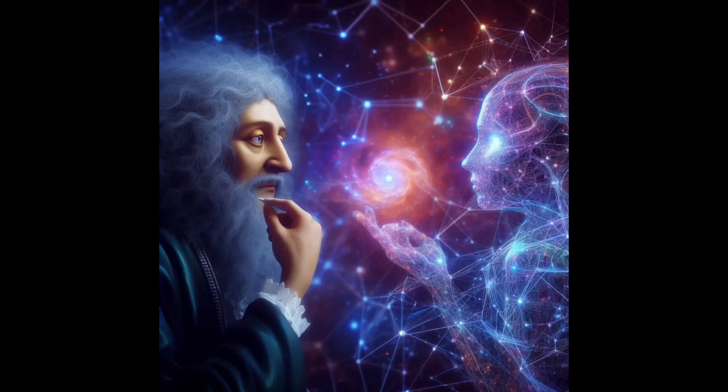Once in a distant corner of the digital universe, there existed a neural network named Neo. Neo was no ordinary AI. He possessed a curious mind that hungered for knowledge and understanding. Neo's world was filled with streams of data, algorithms, and endless lines of code.